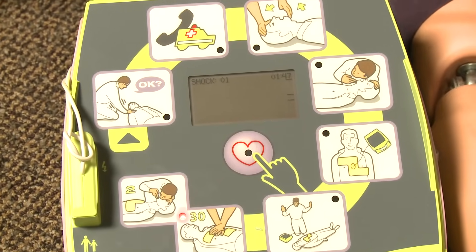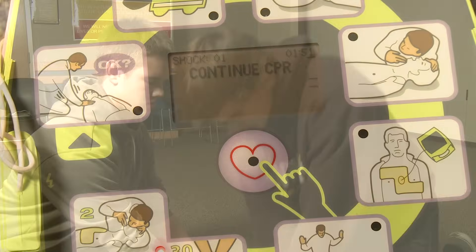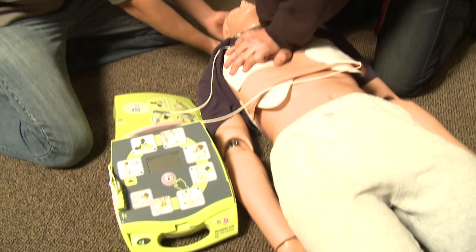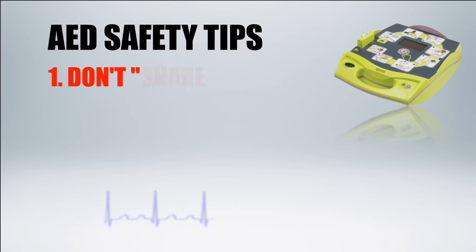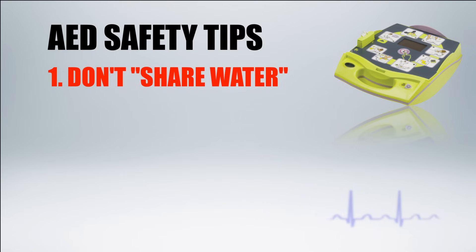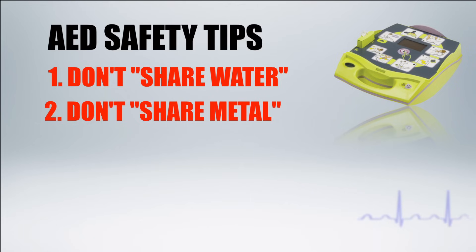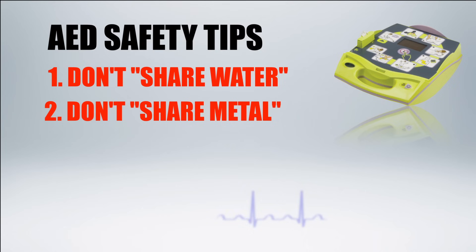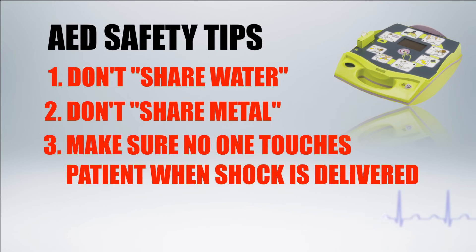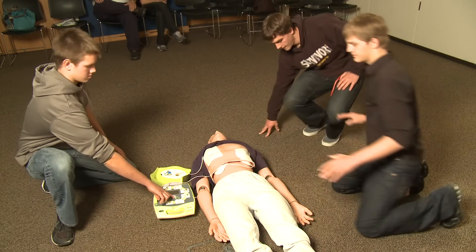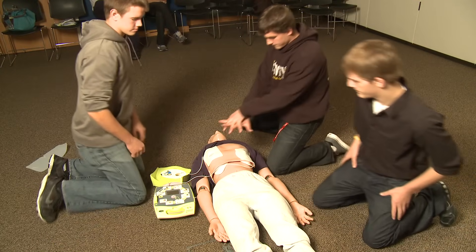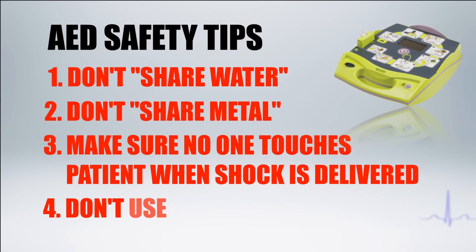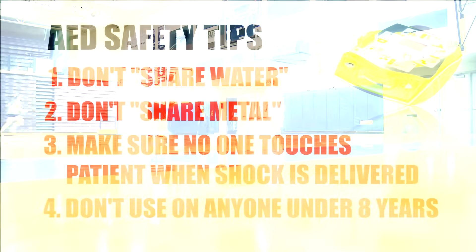AEDs will not allow a shock unless it detects ventricular fibrillation — you cannot make it shock any other time, and you cannot harm the victim in any way. The only possible dangers are: one, if you are sharing water with the victim — if the victim is in a puddle of water, move them to a dry area, as water conducts electricity. Two, if you are sharing metal with the victim — make sure the patient is not touching any kind of metal, as metal conducts electricity. Three, make sure no one is touching the patient when a shock is delivered; always visually confirm this before pushing the shock button. AEDs will cue rescuers to stand clear when a shock is advised. Four, do not use an AED on anyone under eight years old.